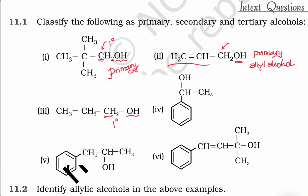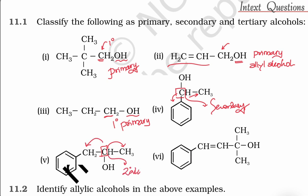Here you can see this carbon is attached to two other carbon atoms. When a carbon is attached to two other carbon atoms, it is secondary. So this is a secondary alcohol. Coming to this one, this carbon is also attached to two other carbon atoms, so this is again secondary.